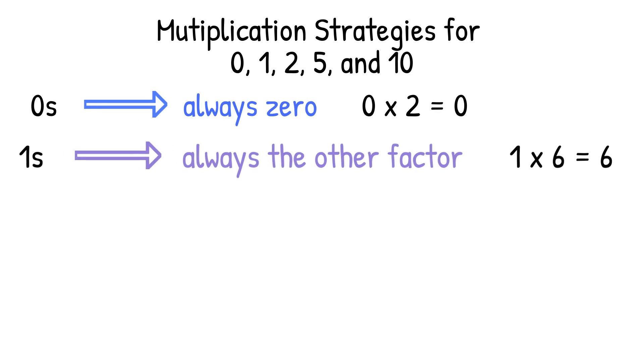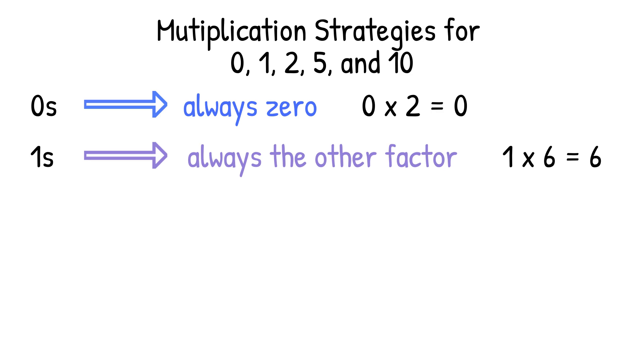When multiplying with 0, the product is always 0. For example, 0 times 2 equals 0. When you multiply by 1, the product is always the other factor. For example, 1 times 6 equals 6. When you multiply by 2, you always double the other factor. For example, 2 times 4 equals 8.